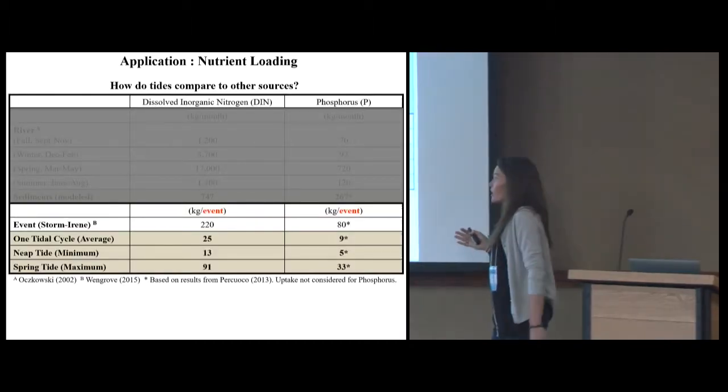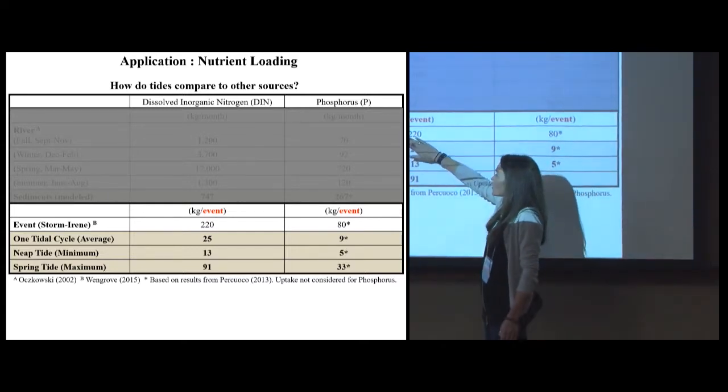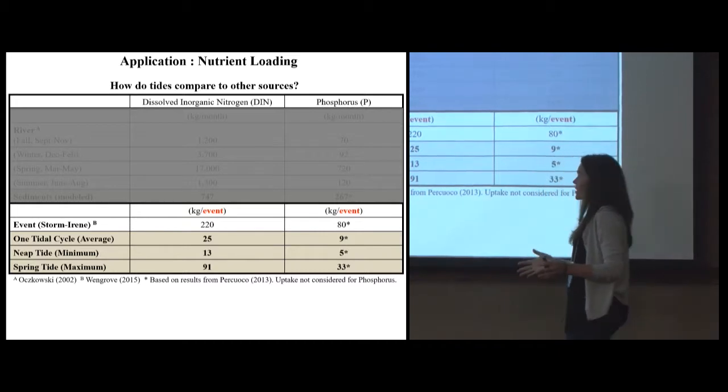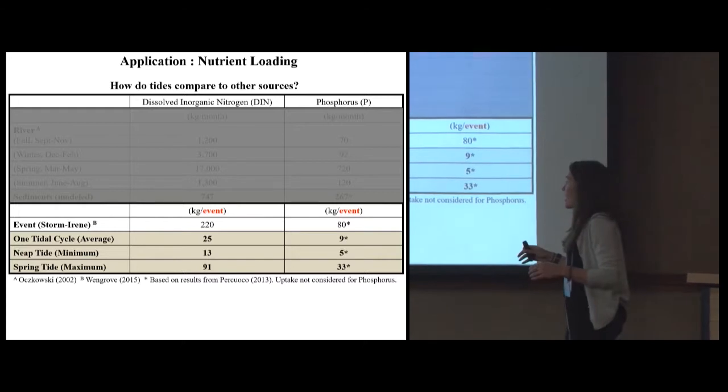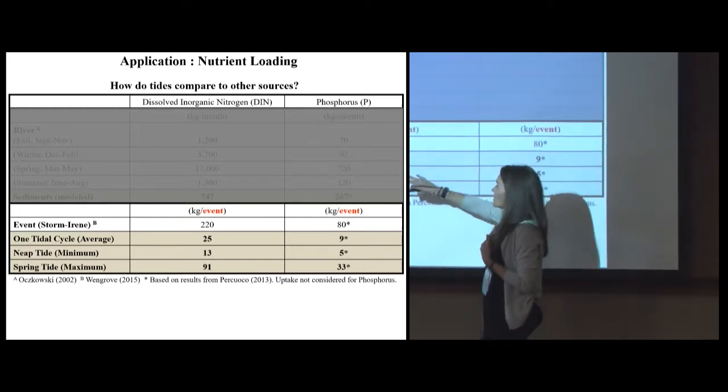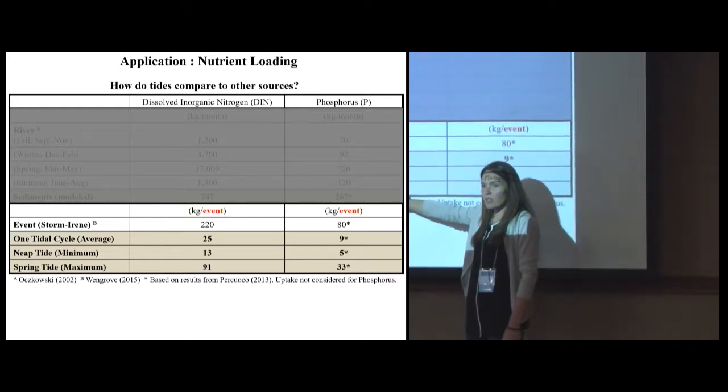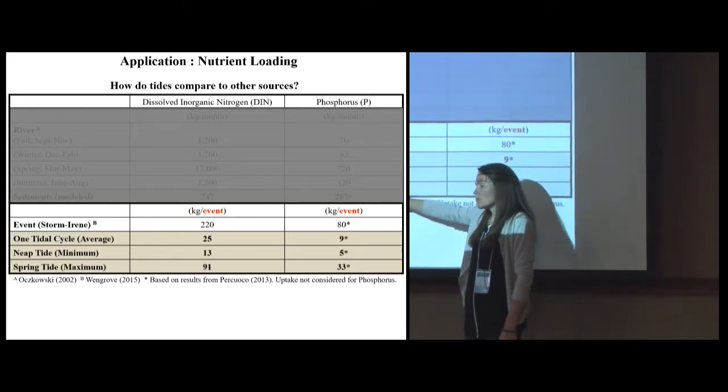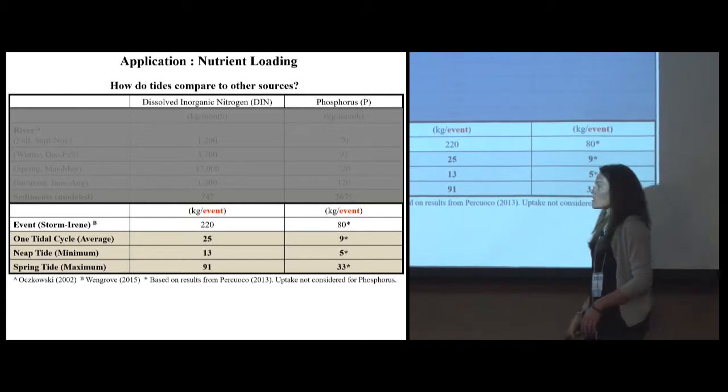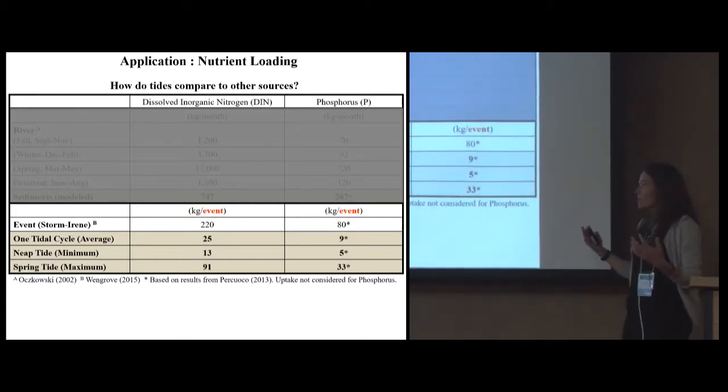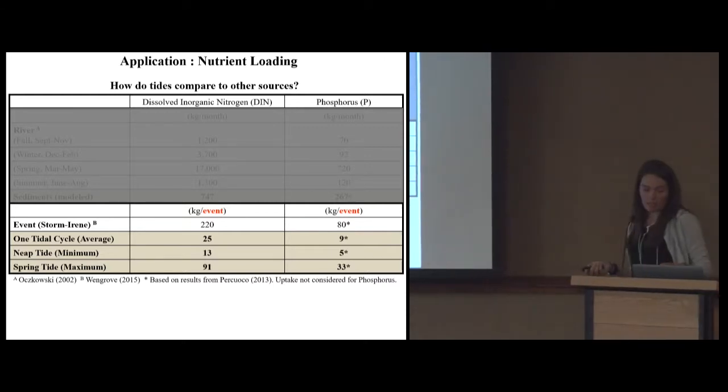Now, what about an event? Super storm Sandy by the time it hit New Hampshire. Megan Wingrove found that 220 kilograms of nitrogen and about 80 of phosphorus were fluxed during that event over the entire Great Bay. What we found is over a tidal cycle, average tidal cycle is about 25 kilograms, a neap tide 13, but a spring tide is 91. So once a month, a couple tidal cycles, you have something that's on the order, about half of an event, right? So these loads are pretty important on a monthly and weekly timescale.